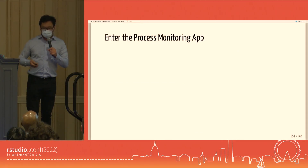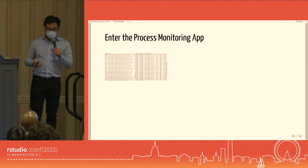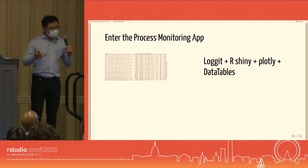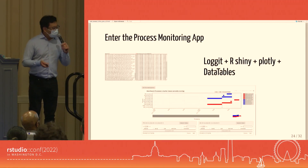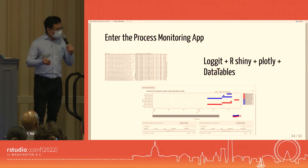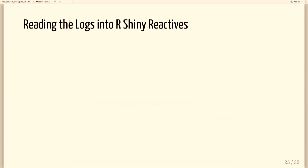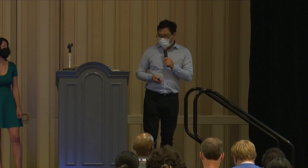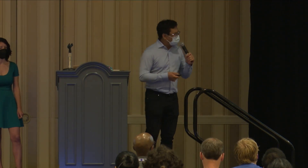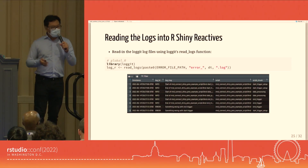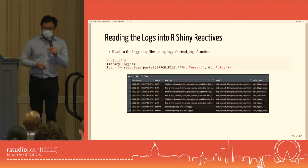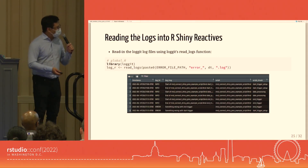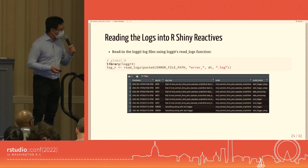Our process for the process monitoring app was to take messy logs and apply Logit, R Shiny, Plotly, data tables, and R visualization packages to turn it into a dashboard showing both process health and errors in one place. We first needed to read the logs into something R-readable. Fortunately, Logit provides a read_logs function: pass the path of your log file and it returns an R data table that's easily filtered by error type, specific process, and time frame.